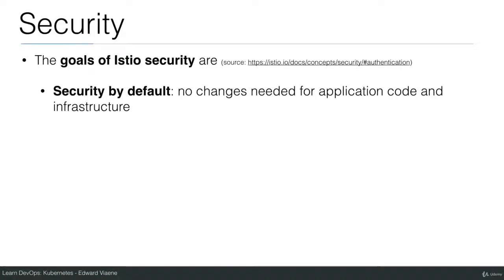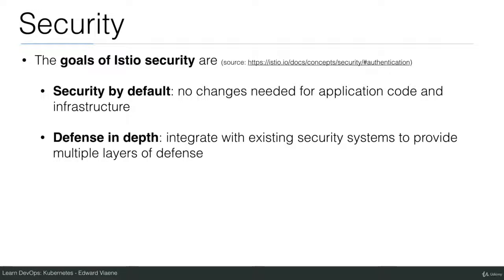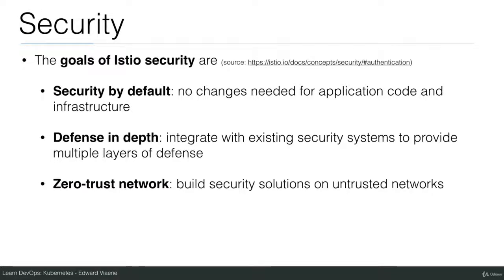The goals of Istio Security are: Security by default — no changes are needed for the application code and infrastructure. In Istio, you get all the features and you shouldn't have to change your application running on your cluster. Defense in depth — integrate with existing security systems to provide multiple layers of defense. One of these layers is the mutual TLS that I'll be explaining in this lecture. Zero Trust Network — builds security solutions on untrusted networks. You cannot trust that your network is secure, that's why you want to encrypt the communication between your services using mutual TLS.